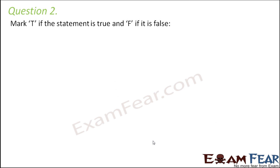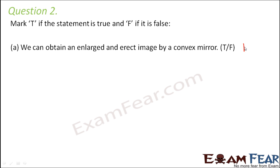Question number two. Mark T if the statement is true and F if it is false. We can obtain an enlarged and erect image by a convex mirror. Now this is false because in convex mirror we can get erect image all the time but what we get is a diminished image and not an enlarged image.